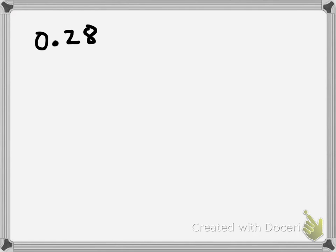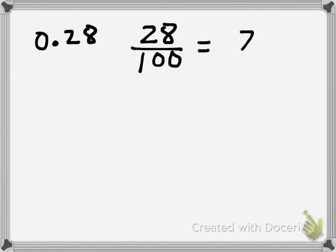Here I've written 0.28 — this is twenty-eight hundredths. First, we'll look at the fraction method. Twenty-eight hundredths — I'm going to write that as a fraction over one hundred: twenty-eight out of one hundred. And then that is equal to twenty-eight percent, percent being out of one hundred.